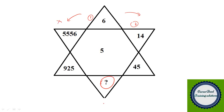If you look at the first leaf and second leaf, the number at the first leaf is half of the number at the second leaf. You can write 6 as 6 into 2 = 12, and 12 plus 2 gives 14. So 6 × 2 + 2 = 14. Now look at the relationship between the second leaf and third leaf: 45 is approximately three times 14. When you multiply 14 by 3 you get 42, and 42 plus 3 gives 45.